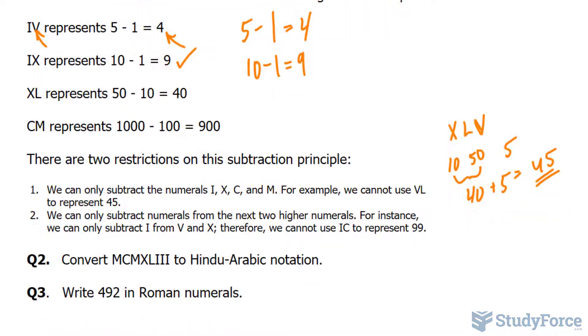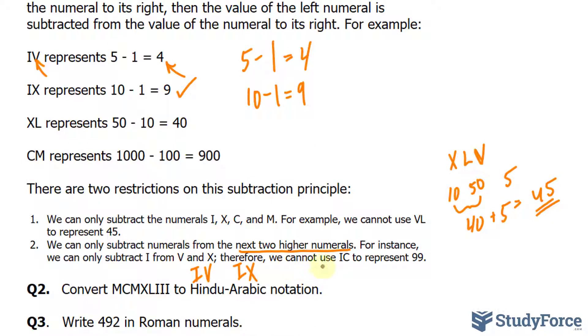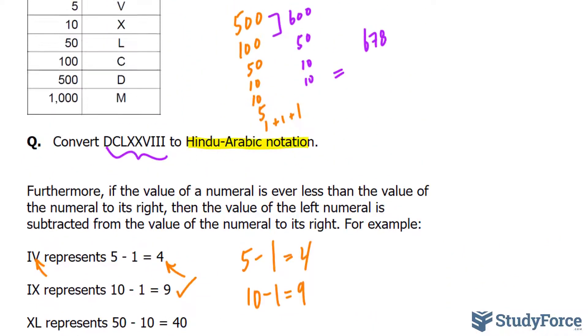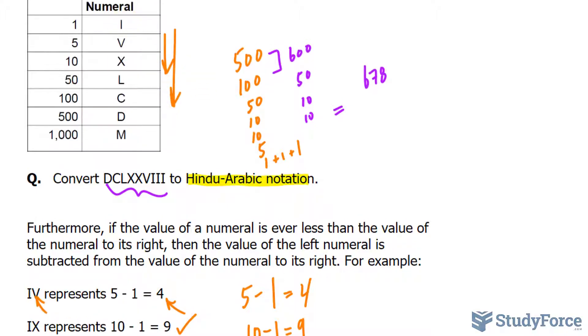The other restriction is that we can only subtract numerals from the next two higher numerals. For instance, we can only subtract I from V and X, but you can't say I and something that is more than 2 from it. For example, we cannot use IC to represent 99. You see, C is beyond two levels greater than I, it's 4. So you can't subtract those if they were side by side.